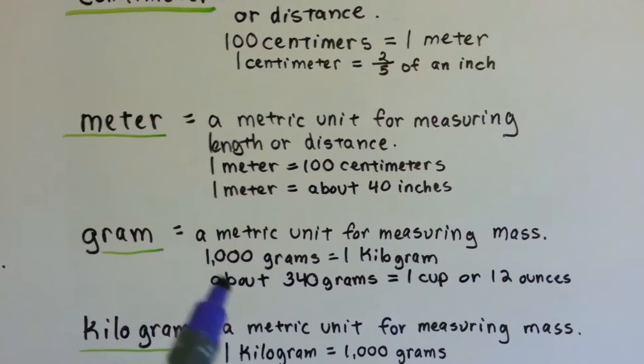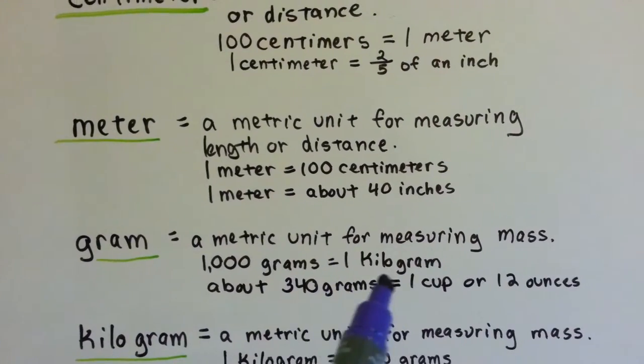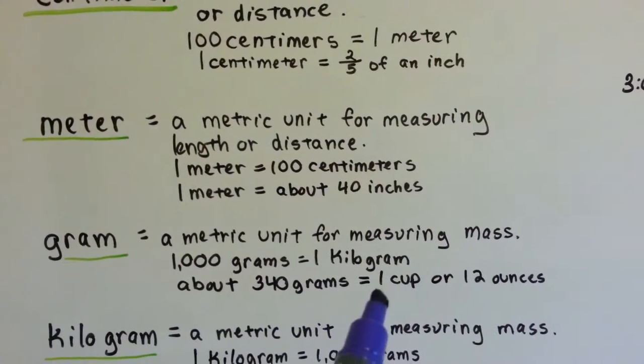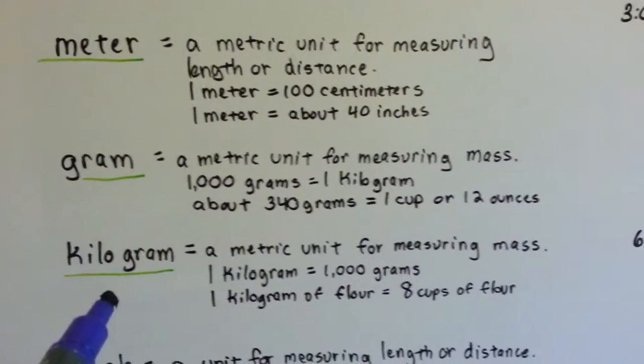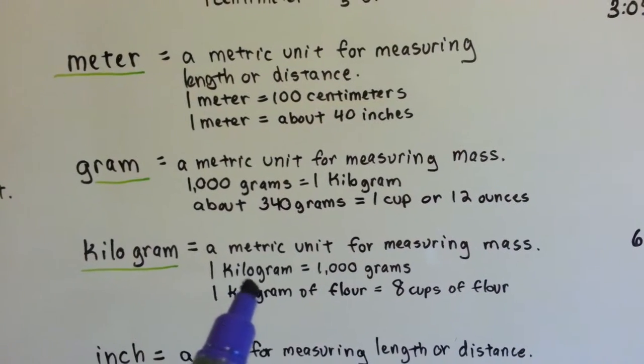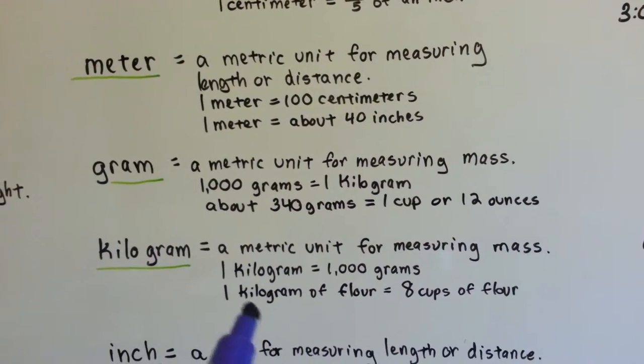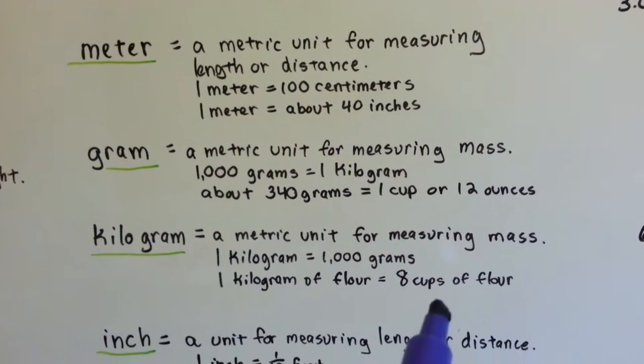A gram is used to measure mass. A thousand grams is one kilogram. There's about 340 grams to one cup or 12 ounces. In a kilogram, that's a metric unit for measuring mass also. One kilogram is a thousand grams. And one kilogram of flour is about eight cups of flour.